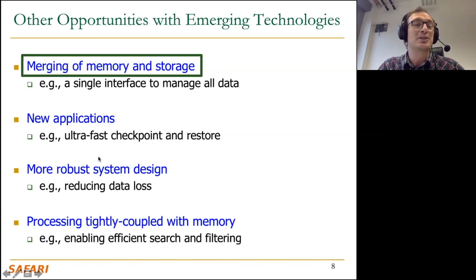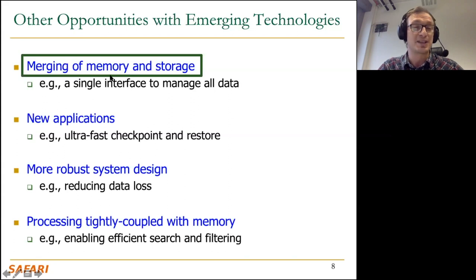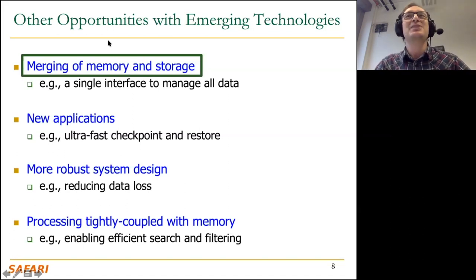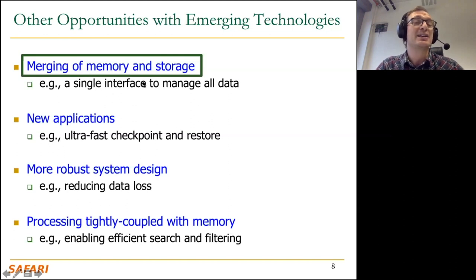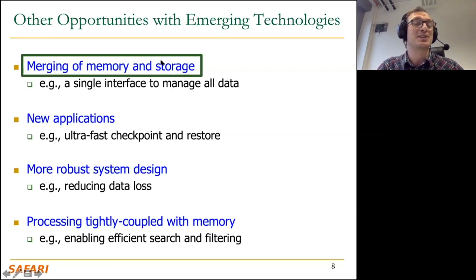The last thing I'm going to cover is the merging of memory and storage, because this is really interesting, especially today. If we have emerging memory technologies that are much closer to main memory in terms of performance, maybe you can eliminate some of the storage hierarchy. As a result, you can store all your persistent data in a persistent memory that houses both your working memory and your persistent storage. This could enable a single interface to manage all data, as opposed to the multiple interfaces we use today.